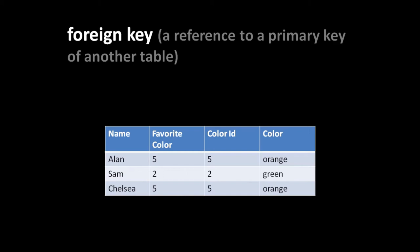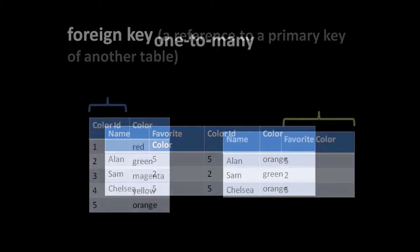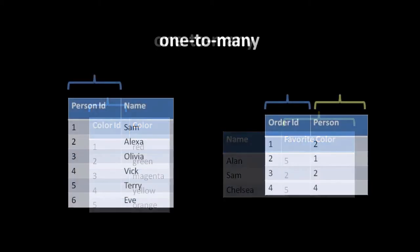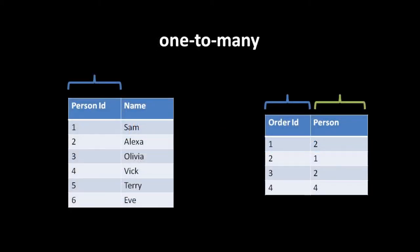A one-to-many relationship is like the one we just saw: for any one color, there are many people who might have that as their favorite color - one color, many people. This gets expressed with two separate tables, one for colors and one for people, where the people table has a foreign key pointing to the primary key of the colors table. For another example, one person might make multiple orders - so if you have a people table and an orders table, the orders table has a foreign key referencing the primary key of the persons table.